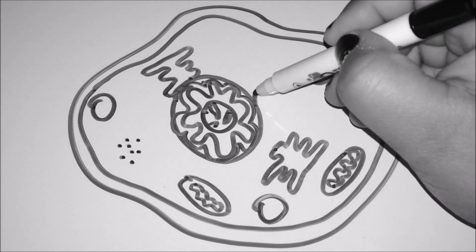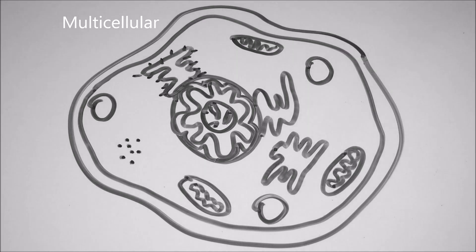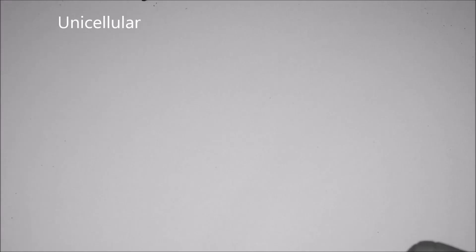These organisms that have more than one cell, such as animals and plants, are called multicellular. There are other living things that are only composed of one cell, such as bacteria or most protists. These are called unicellular.